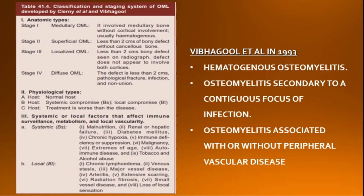There are three types: hematogenous osteomyelitis, osteomyelitis secondary to a contiguous focus of infection, and osteomyelitis associated with or without peripheral vascular disease.